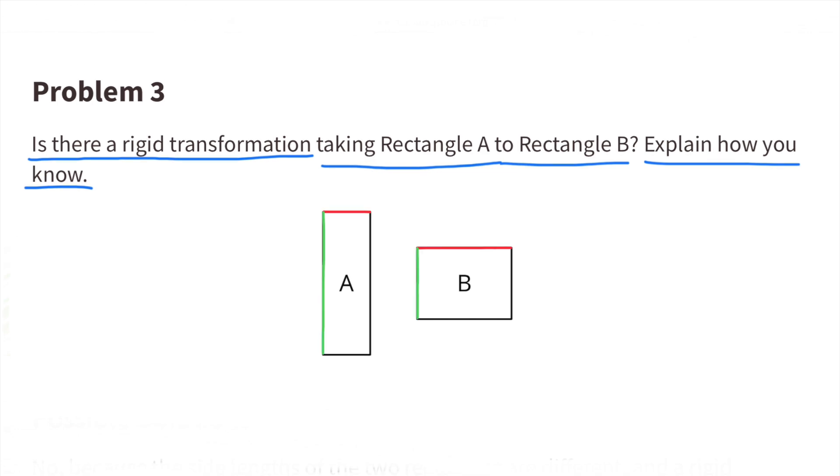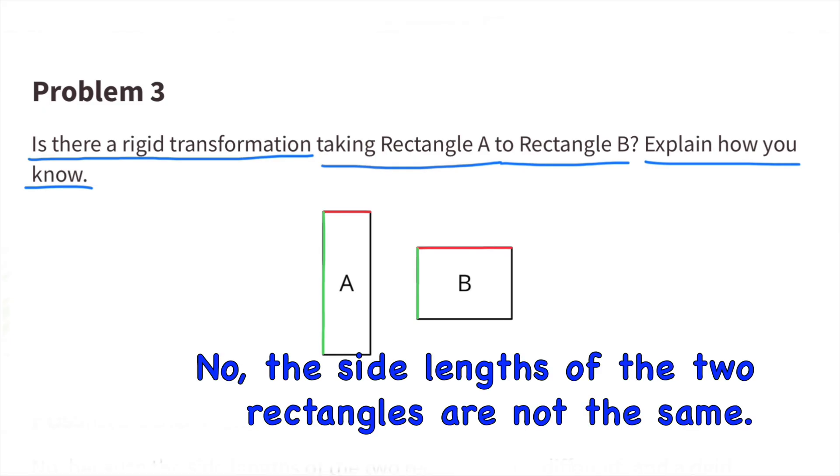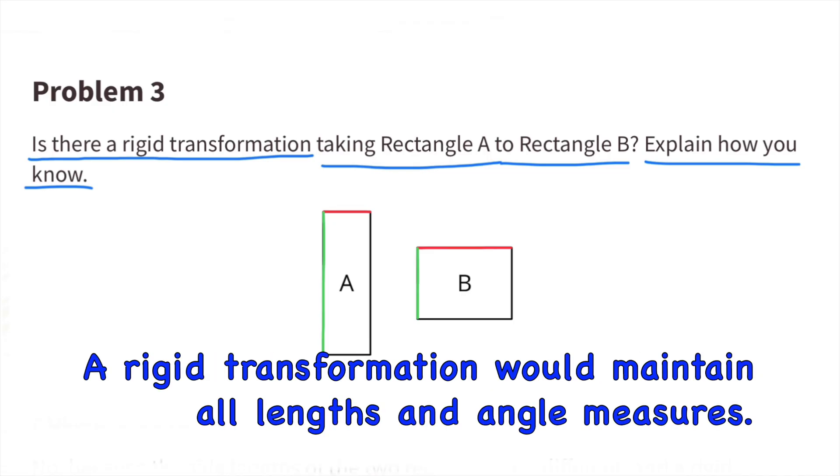First, take a look at the corresponding lengths in green and the corresponding lengths in red. There is no rigid transformation taking place because the side lengths of the two rectangles are not the same. A rigid transformation would maintain all lengths and all angle measures.